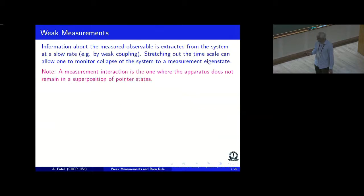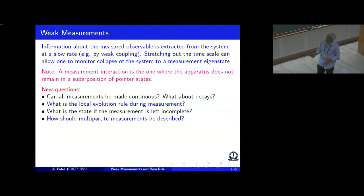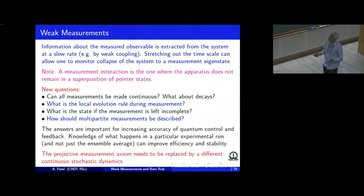To construct the interpolation, I am going to take help of the paradigm of weak measurement where the system and the apparatus are very weakly coupled, which stretches out the timescale over which the measurement takes place. And even with that stretched out timescale, I assume that the system and the apparatus are shielded completely from the environment. It raises new questions about how to do the interpolation and what kind of properties should be maintained, how will things change if there are multipartite measurements. And that requires replacing this projective measurement axiom by different continuous and stochastic dynamics.